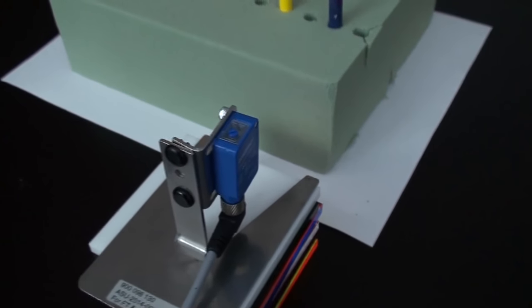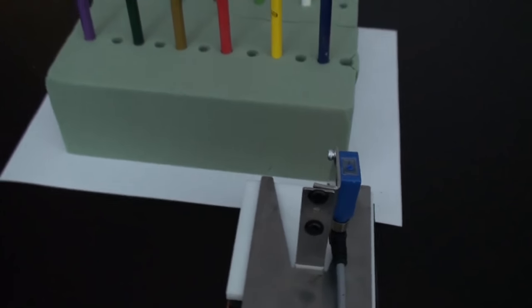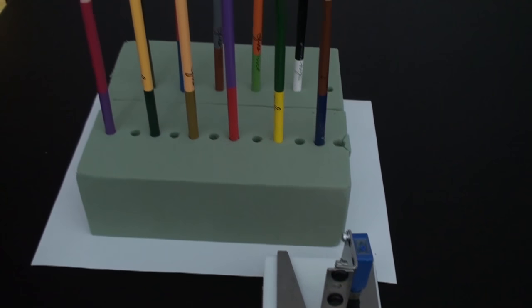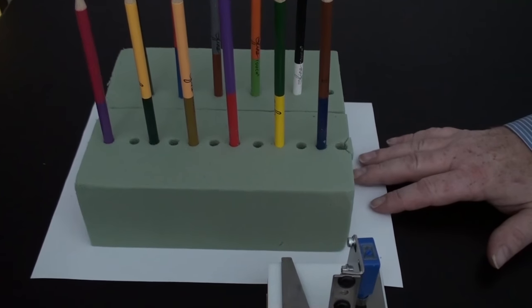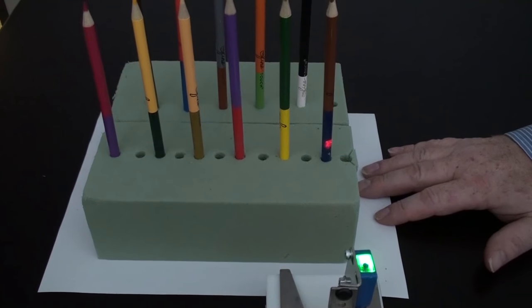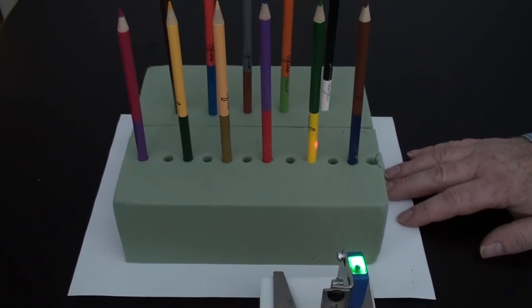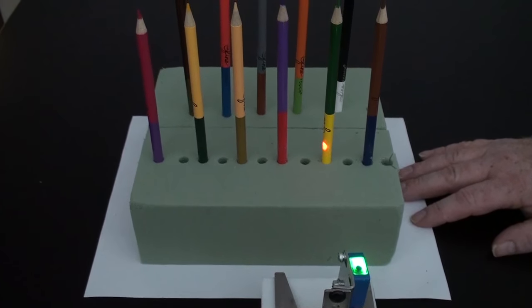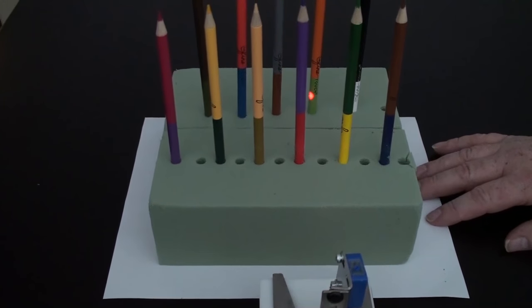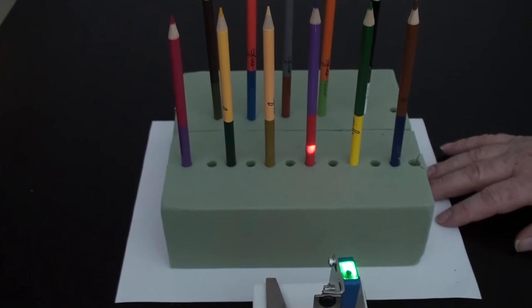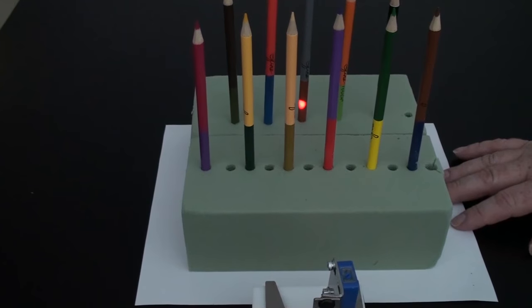This is the C23 with background suppression. A lot of our competitors call these distance sensors for this reason. You can set it to detect the front object and ignore the back one. Here you can see multiple different colors and shiny curved targets that are detected by background suppression.